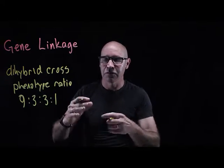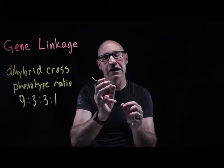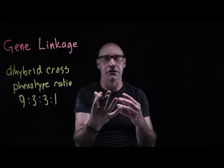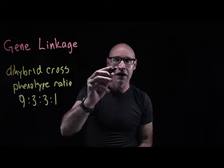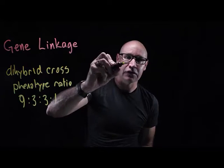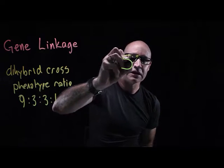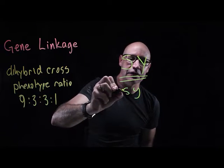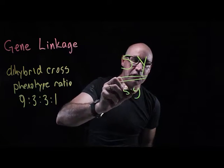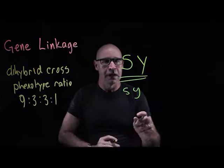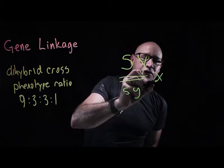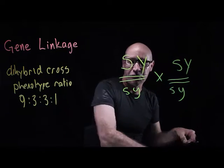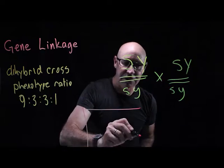We're talking about hybrids, so that means it's the heterozygous state — we've got two different alleles present. So with linked genes, smooth yellow is the dominant allele combination, and small s, small y represents green wrinkled. That's the hybrid with its two alleles. If we cross two of these plants with these linked genes, let's do a Punnett square and see what happens.